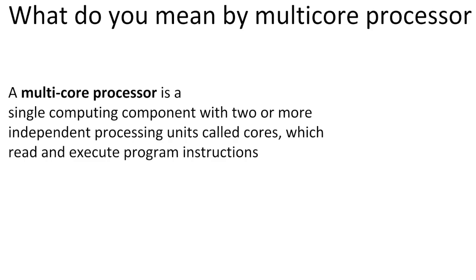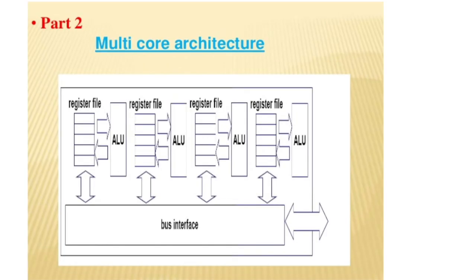Now let's look at a picture of how a multi-core processor looks. To understand what multi-core processors do — for example, if you want to listen to music, work on an Excel sheet, and browse the internet simultaneously, a multi-core processor can handle multiple programs at once.